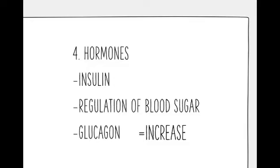For a diabetic person, insulin helps blood sugar enter the body cells so it can be used for energy. Insulin also signals the liver to store blood sugar for later use. Blood sugar enters cells and levels in the bloodstream decrease, signaling insulin to decrease too.